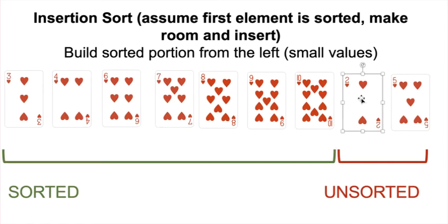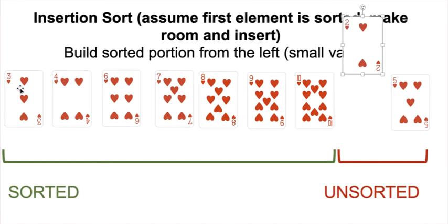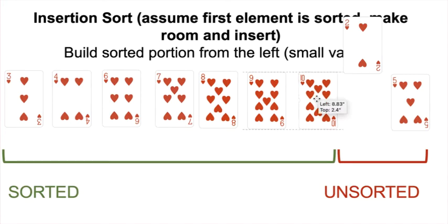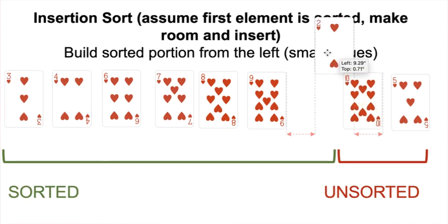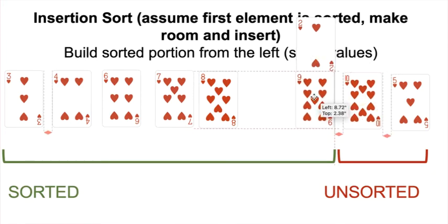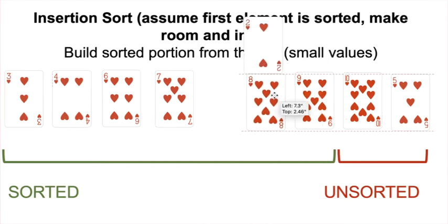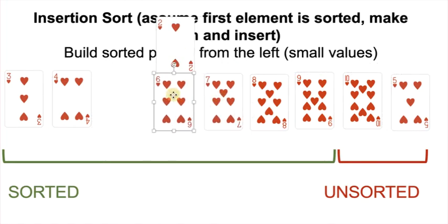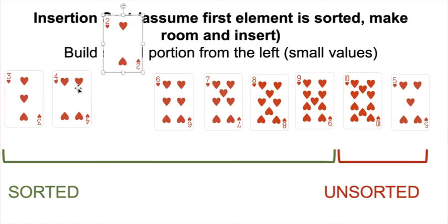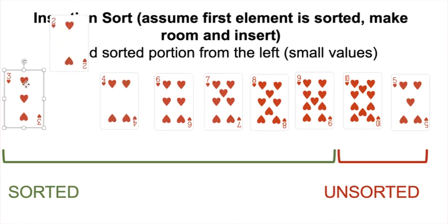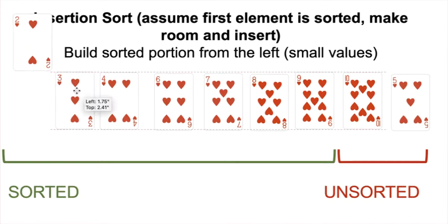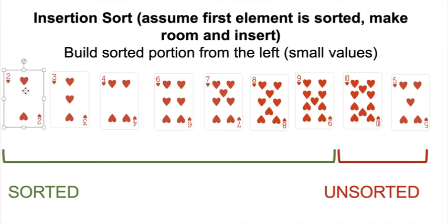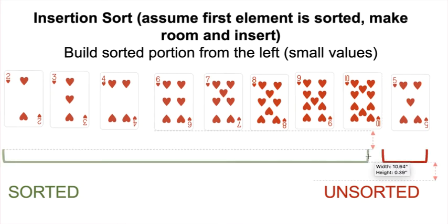The two — we're going to have to do a lot of copying and shifting to make room since it's got to go all the way to the beginning. Is two smaller than ten? Yes — move ten over. Two smaller than nine? Yes. Two smaller than eight? Yes. Two smaller than seven? Yes. Two smaller than six? Yes. Two smaller than four? Yes. Two smaller than three? Yes. We're at the beginning of the array — no more cards to check — so the two must go here. Shrink our unsorted by one and grow our sorted by one.